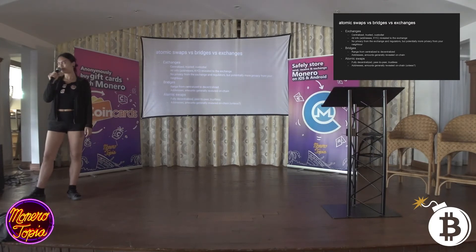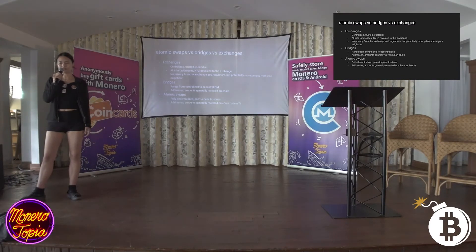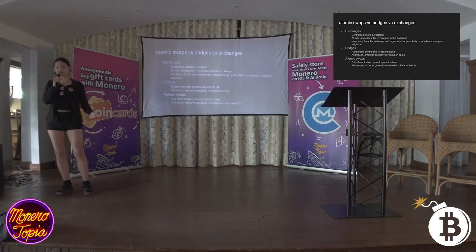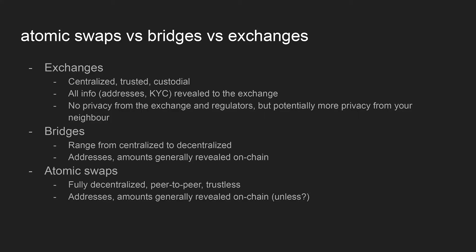Bridges range from centralized to decentralized, and the level of privacy varies. On a non-private chain your addresses and the amounts that are swapped are going to be revealed. With bridges there's usually a third party like relayers. For atomic swaps, it's most similar to something like local Monero, except on your computer — it's a much better level of privacy. It's decentralized, trustless, totally peer-to-peer, just two parties: you and the other person.